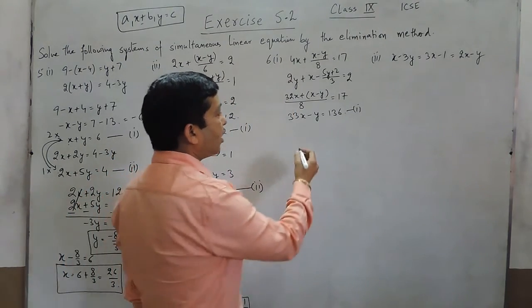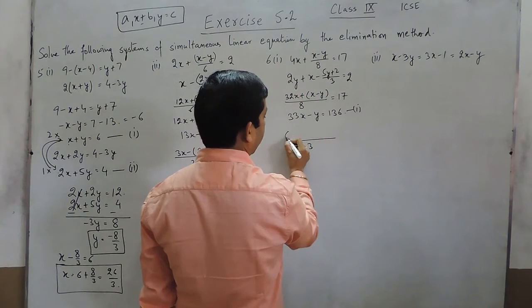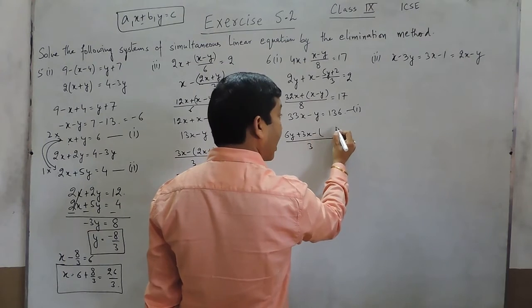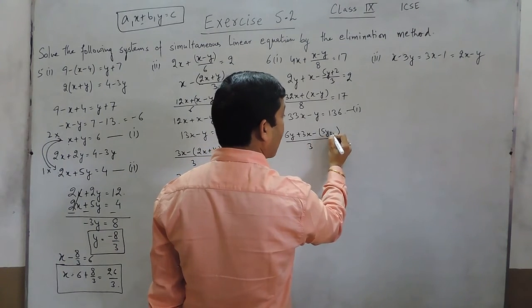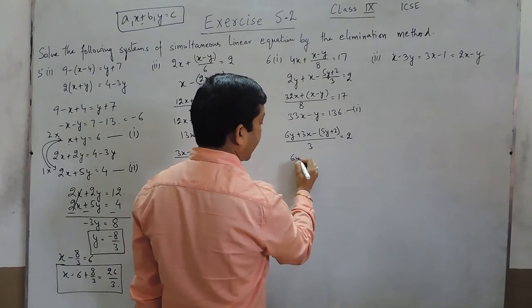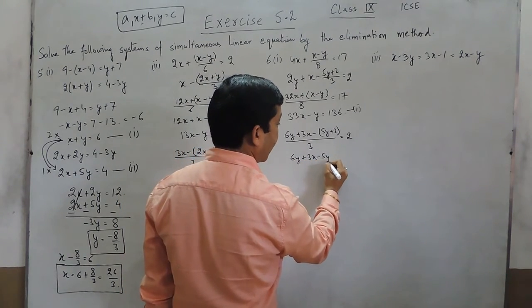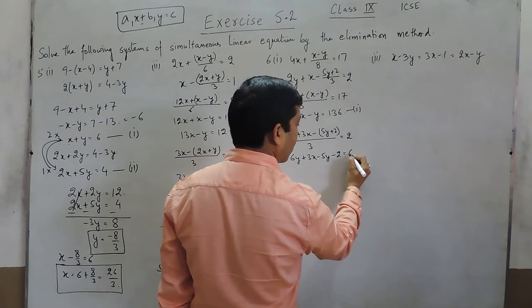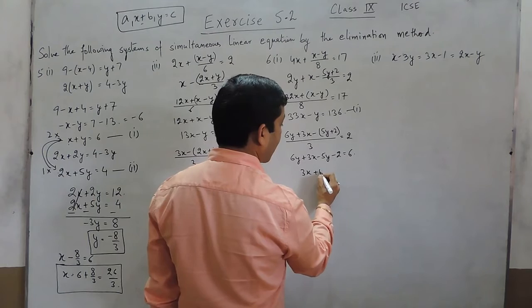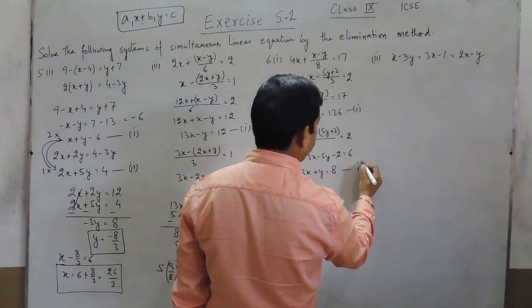If we look at the second equation, we can take 3 as the LCM and it comes out to be 6y plus 3x minus — again I have taken it in bracket — (5y plus 2) is equals to 2. So it is 6y plus 3x minus 5y minus 2 is equals to 6. Further solving it, it is 3x plus y is equals to 8. This is the second equation.